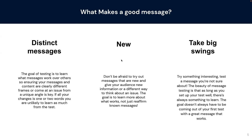The next thing is new messages. It can be tempting to test messages that are already out there because we want to find something that works, and it's easy to say let's test messages we're already seeing polling about. But the beauty of this tool is you can test new things — a message you've never seen before, a frame you think might not work. Going with gut instinct sometimes means you're not finding new things that actually work with your audience. Building on that, taking big swings is something we really encourage — don't always go with what you know works. Try a message that's a big swing away from your current approach and see what differences you find.